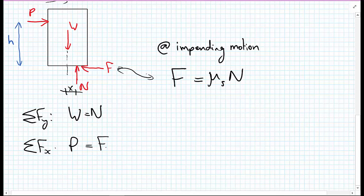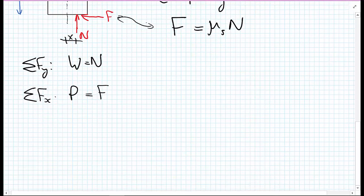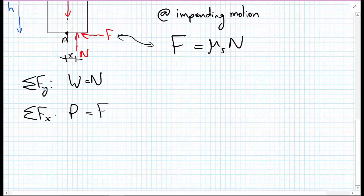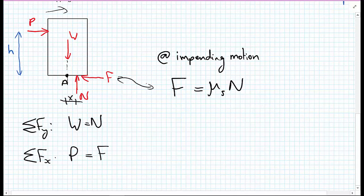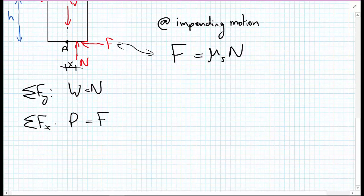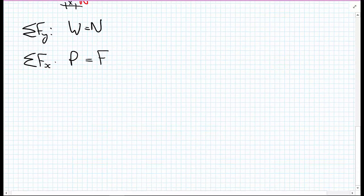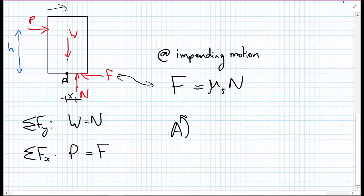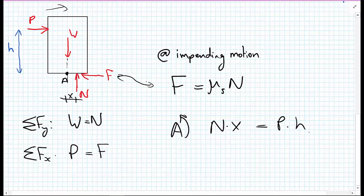If we need to work out what this distance X is where N is applied, we can take moments. In this case, it's useful to take moments about A, and therefore W doesn't have any lever arm. F doesn't have any lever arm because it's going through this point. We only need to consider the normal force N and the load P. If we take moments about A, we have N times X going in an anti-clockwise direction, and that must be equal to P times H going in the clockwise direction.